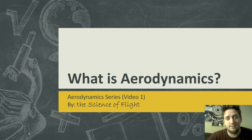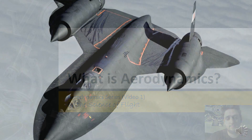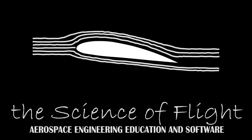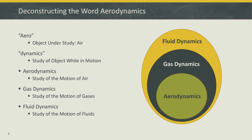Let's start by deconstructing the word 'aerodynamics.' It can be broken up into two parts: 'aero' and 'dynamics.' Aero means air — the main object under consideration in aerodynamics is air. Dynamics means we will be studying objects in motion, as opposed to statics, which is the study of objects in equilibrium or at rest. Often the study of aerodynamics begins with aerostatics — the study of air in equilibrium — before moving into actual aerodynamics. Putting it all together, aerodynamics is the study of air in motion.